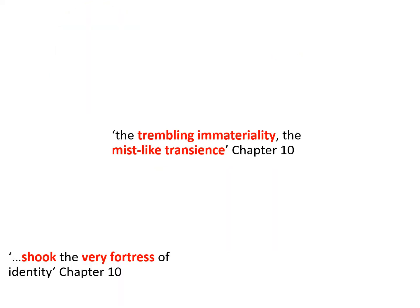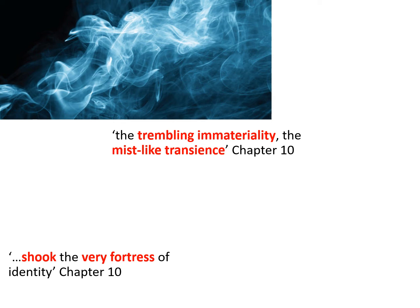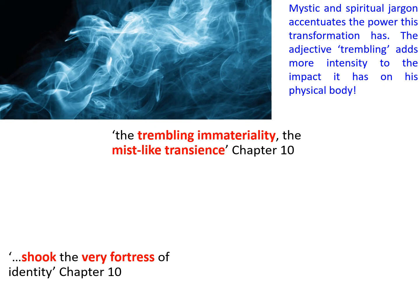So where better to see the mystic elements of science than in chapter ten — the reveal from Jekyll of the power of science as it takes over his body with the potion that transforms him from Jekyll to Hyde and back again. The descriptions of the 'trembling immateriality' and the 'mist-like transients' are full of spiritual jargon that's mystic. The image of the mist-like transients accentuates the power that such a transformation has, and the adjective 'trembling' alongside 'immateriality' adds even more intensity to the impact on his bodily identity.